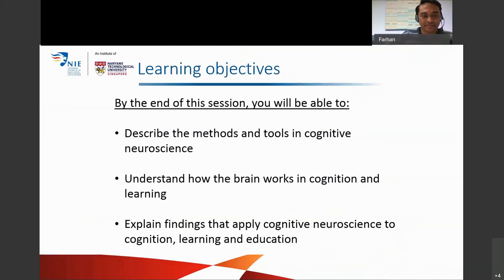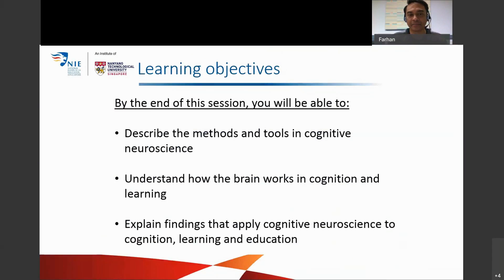By the end of this session, I hope everyone in the class will be able to describe the methods and tools in cognitive neuroscience and understand at a basic level how the brain works in cognition and learning. And finally, at a higher level, explain findings that apply cognitive neuroscience to cognition, learning, and education. These are the learning objectives I hope we can bear in mind as I go through the content.